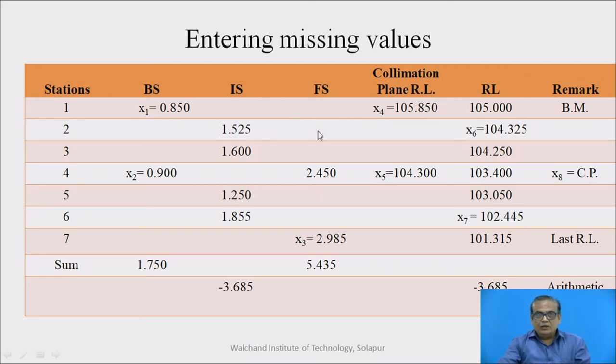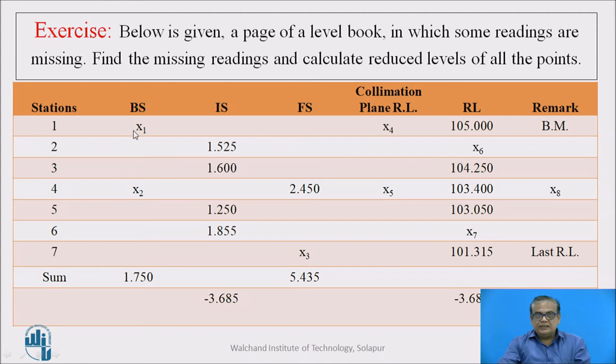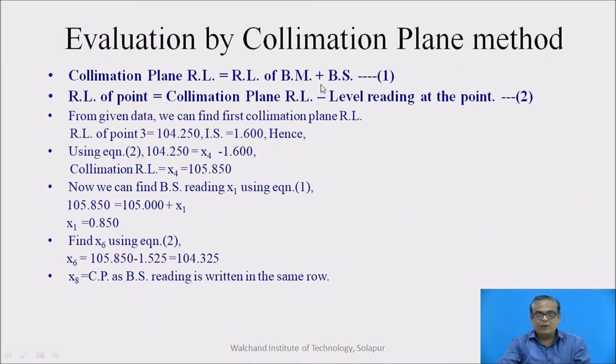Once we have got X4, now X1 can be found easily. Remember, because RL of benchmark is there, collimation plane RL is there. So backside reading can be found from which equation? Equation number 1. Collimation plane RL is equal to RL of benchmark plus backside reading.